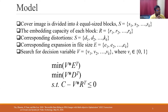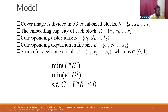The embedding capacity for each block depends on the irreversible technique being used — different algorithms yield different values. For each block, that introduces some distortion D, and there is a corresponding file size expansion. What you want to do is minimize the overall impact by selecting which blocks to modify.